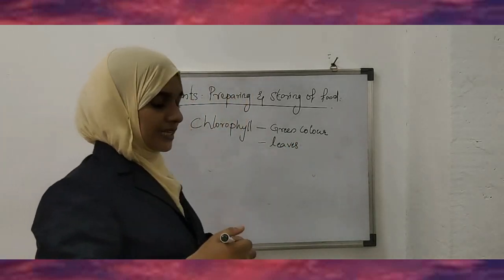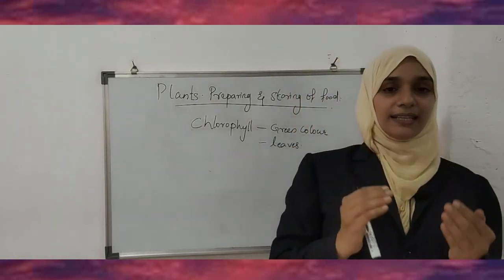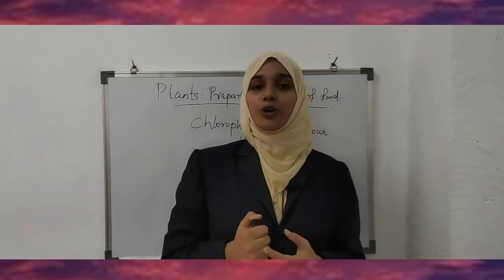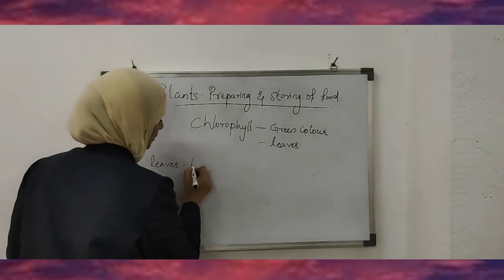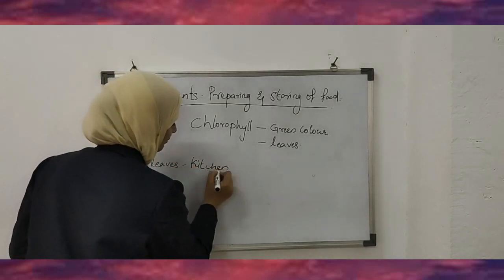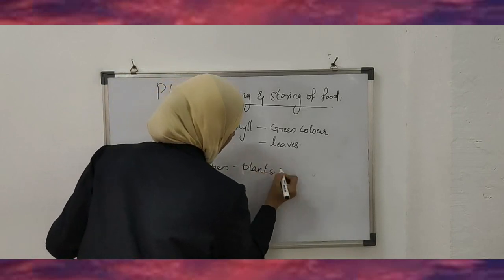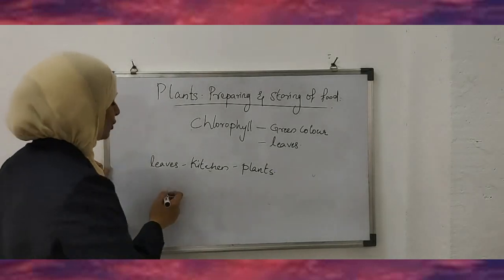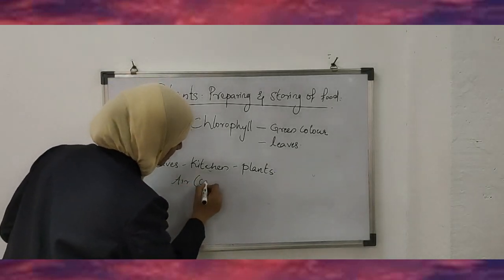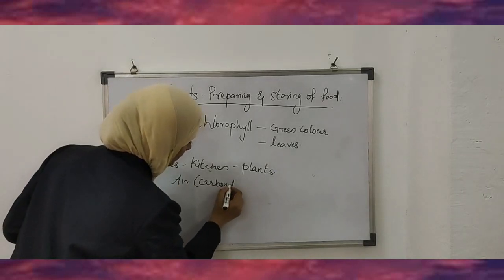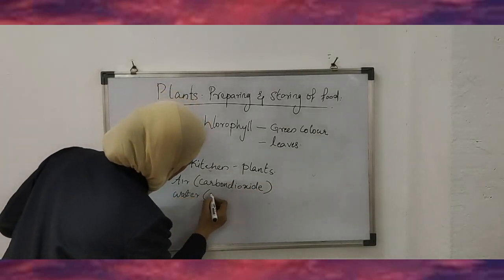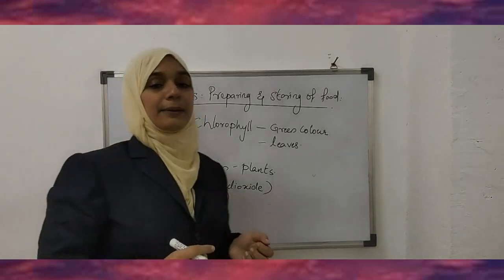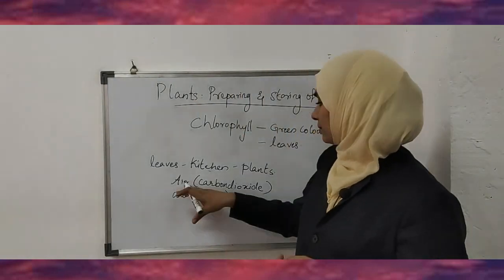With the help of this green pigment chlorophyll, the leaves absorb sunlight. With the help of air and water, they produce food. The leaves are the kitchen of the plant. Plants produce food with the help of air — that means carbon dioxide from the atmosphere — and water, which is absorbed from the soil by the roots.